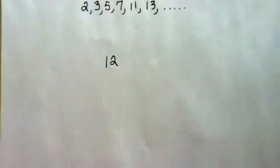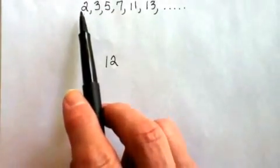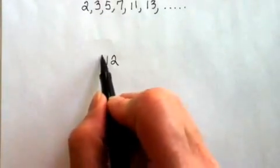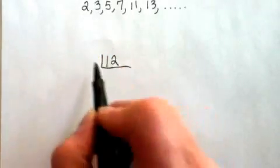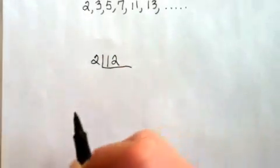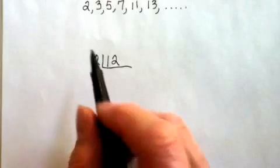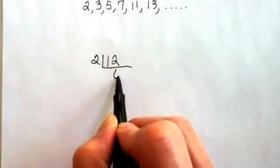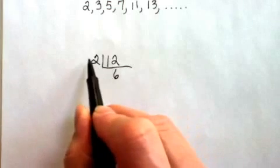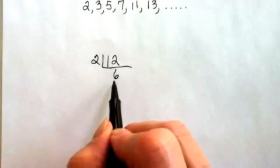The first number we're looking at is the number 12 and we need to decide if we can divide by 2. Does 12 divide by my first prime number 2? Yes it does. In this method the answer does not go on the top, it goes under the 12. 12 divided by 2 is 6.